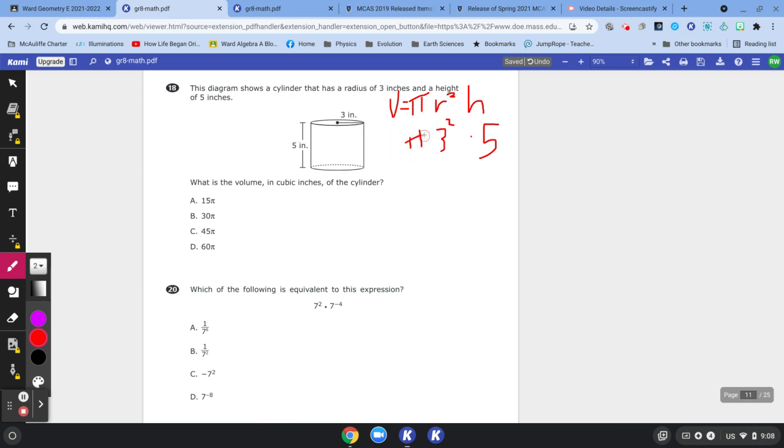If you look at the answers, they're all in terms of pi. So you can kind of treat pi like a variable. That's going to be 3 squared, which is 9. 9 times 5, and 9 times 5 is 45.